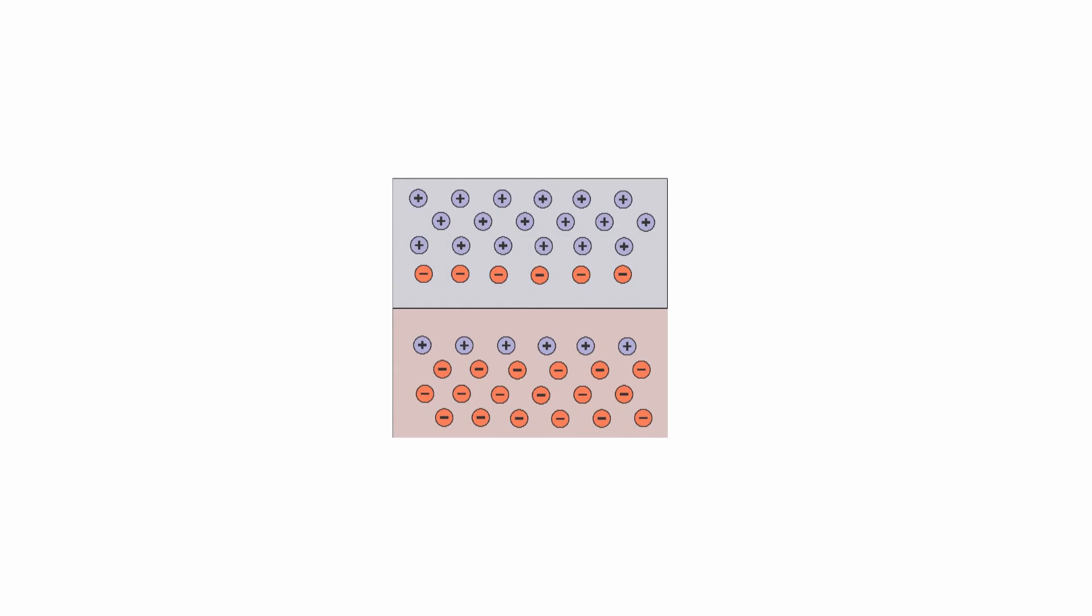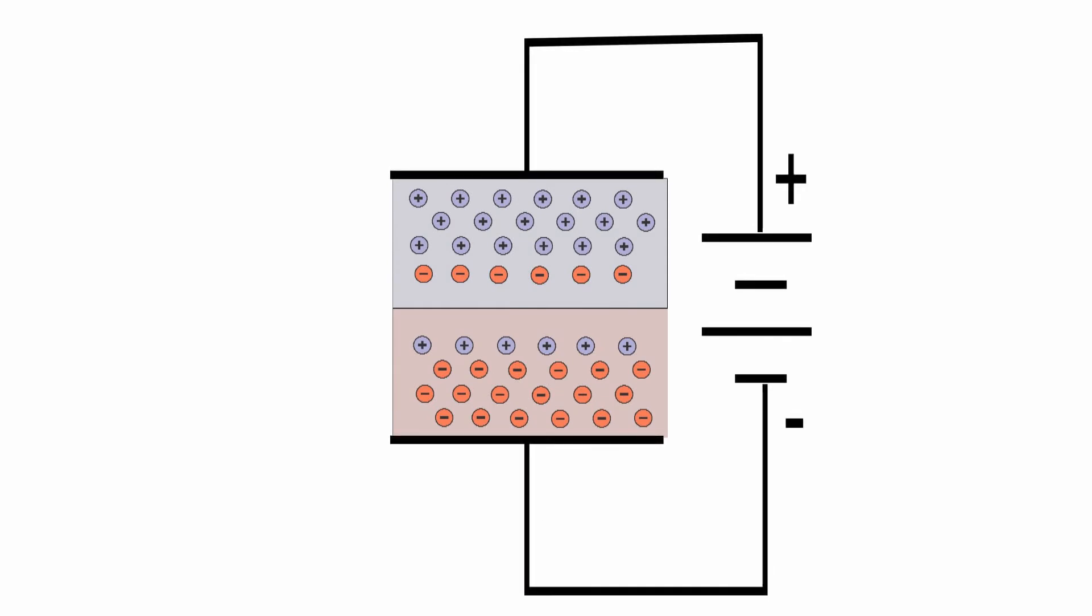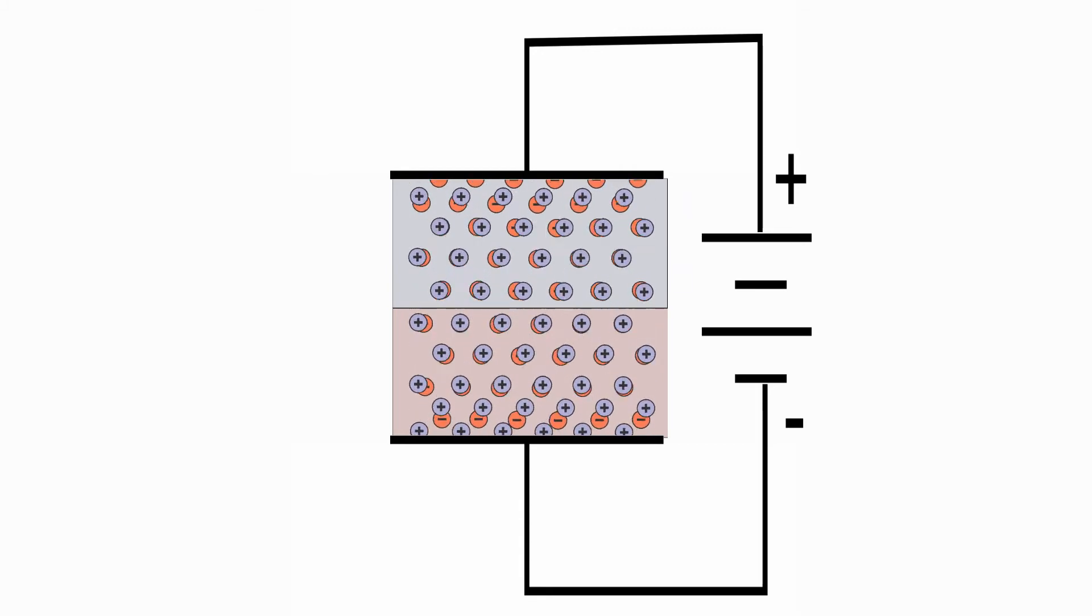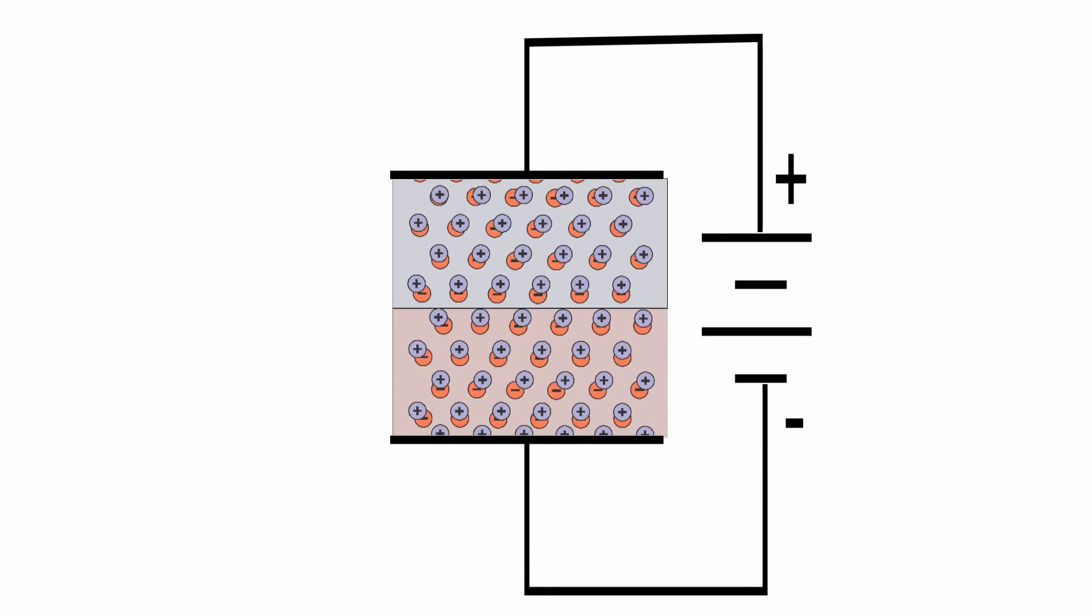What happens if we connect a battery to our joined semiconductor material? First, with the positive lead connected to the p-material and the negative lead connected to the n-material. Prior to connecting the battery, the p-material gained some electrons, or negative carriers, that are now attracted to the positive battery lead. Likewise, the n-material has some holes, or positive carriers, that are attracted to the negative battery lead.